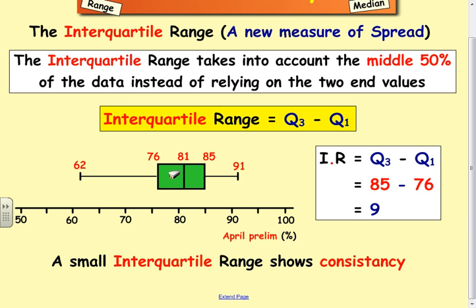Now if you've got a small interquartile range, what that shows is the information, the middle 50%, is not very spread out, which means the marks are quite consistent, quite packed together. So if you're looking for consistency, you want low measures of spread, low ranges, low interquartile ranges.